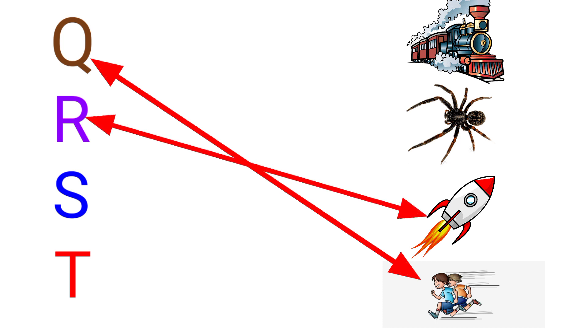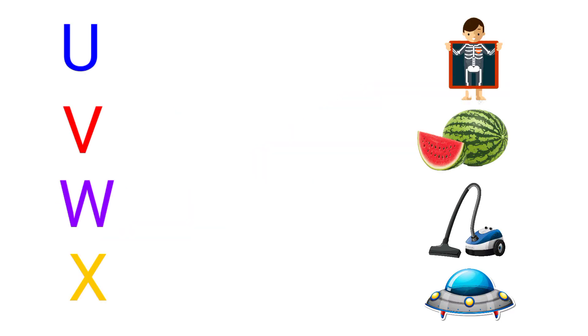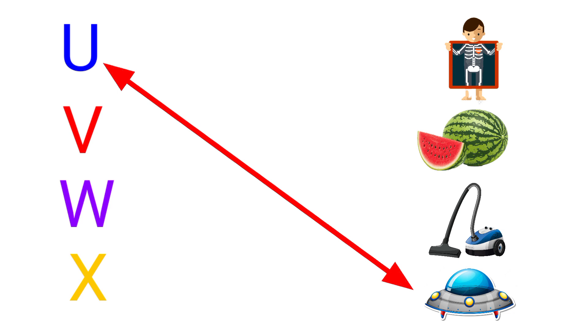R for Rocket, S for Spider, T for Terrain, U for UFO, V for Vacuum.